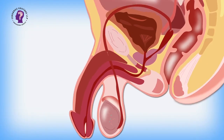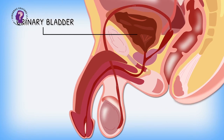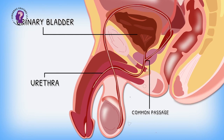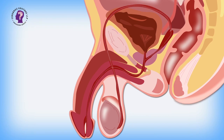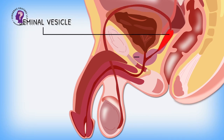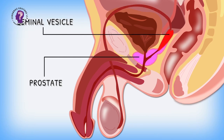The sperm formed are delivered through the vas deferens, which unites with the tube coming from the urinary bladder. Thus, the urethra forms the common passage for the sperm and urine. Along the vas deferens, seminal vesicle and prostate glands add their secretion, so the sperm are now in fluid which makes their transport easier and also provides energy.